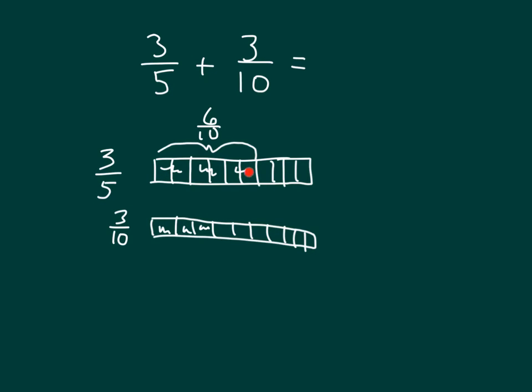And then we shade in three of them to indicate three-tenths. So we have six, seven, eight, and nine. Nine-tenths is our answer.